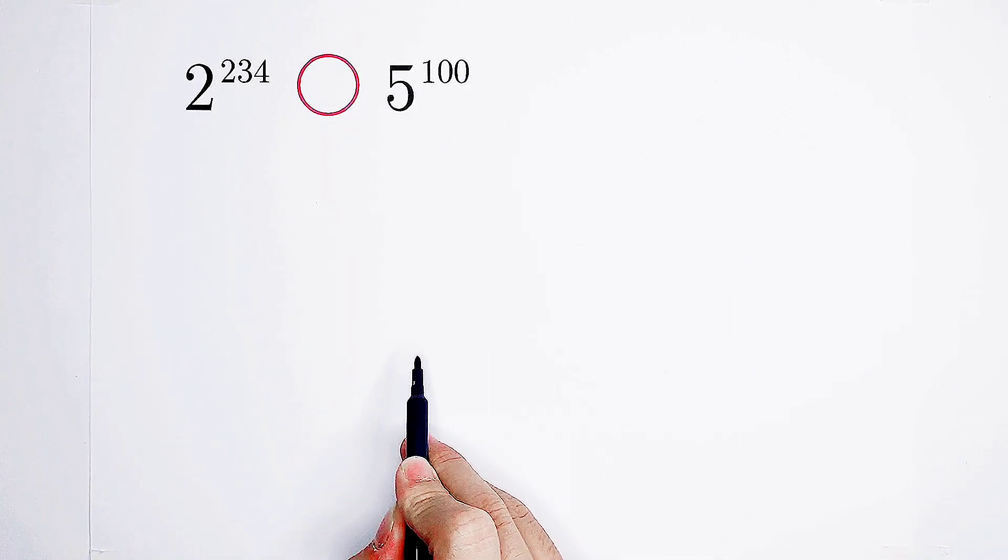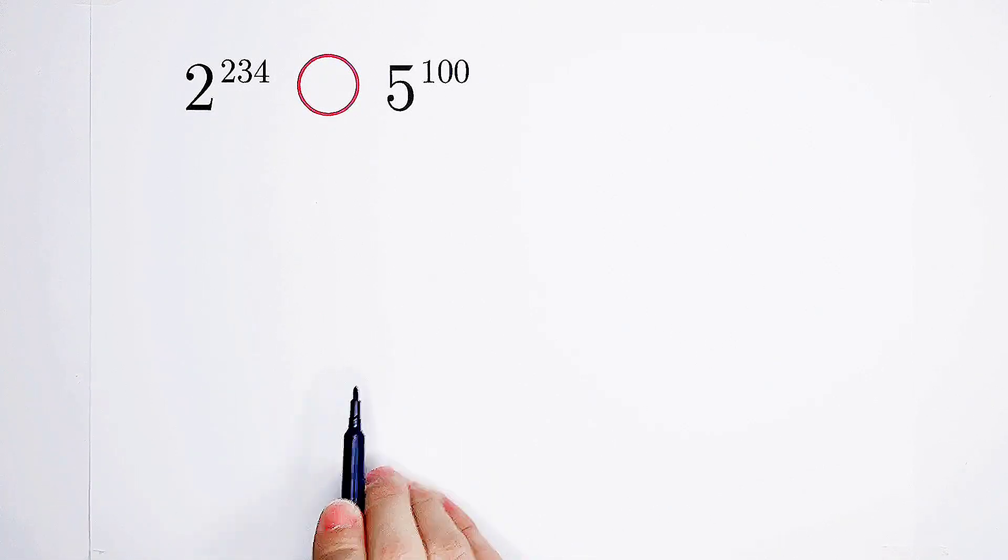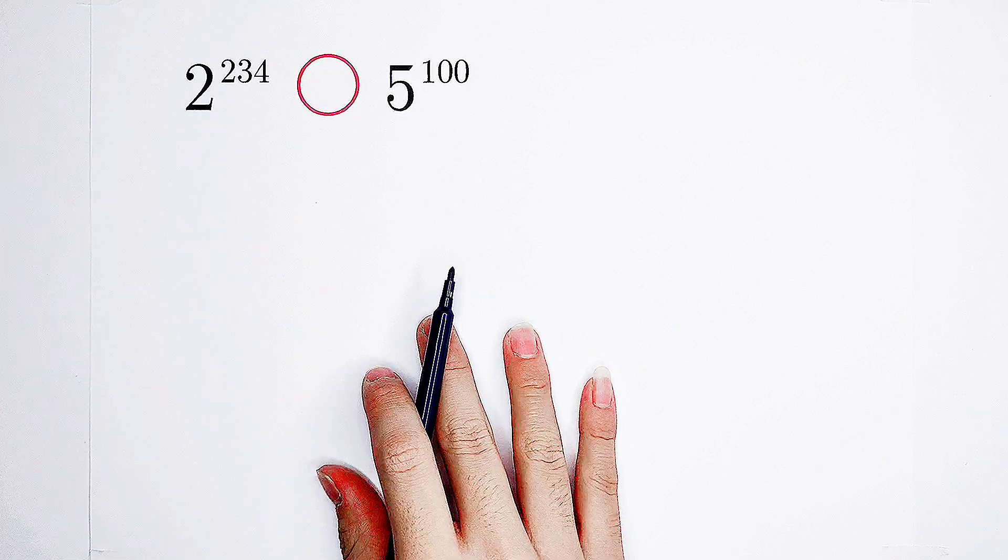Usually, what do we do? Of course, division. We can divide both sides by one of the sides, and then compare the result with 1.